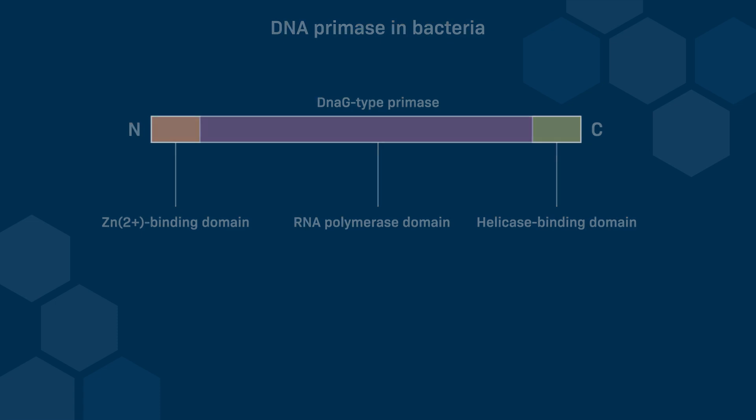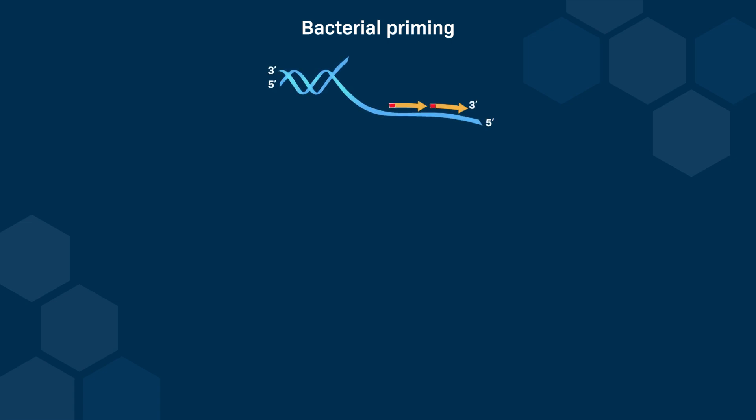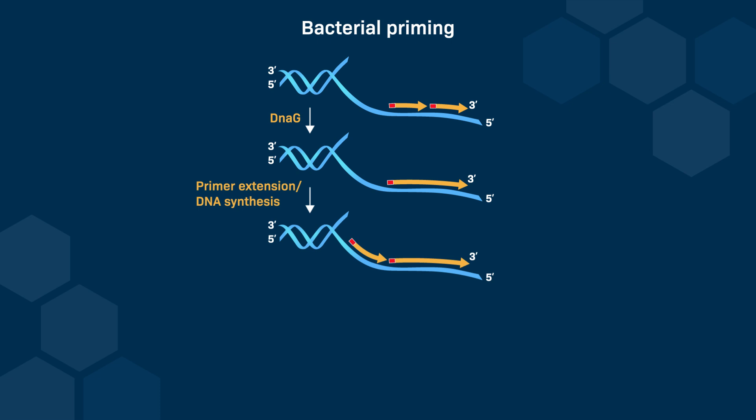Now let's take a closer look at the synthesis of a primer. We have a single strand of DNA with an Okazaki fragment on the right side that has already been made. DNAG, the primase, will bind on the left side and be responsible for the synthesis of a new primer. Then, the primase will dissociate from its template and the Okazaki fragment will be made by the elongation of the primer by DNA polymerase 3. This leads to the formation of an Okazaki fragment that is between 1,000 and 2,000 bases in length. The elongation of this Okazaki fragment will stop when the DNA polymerase reaches the previous Okazaki fragment on the right side.